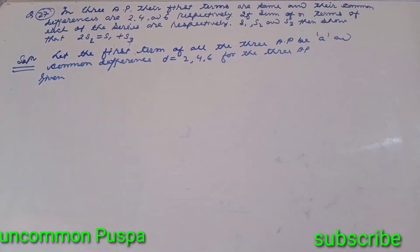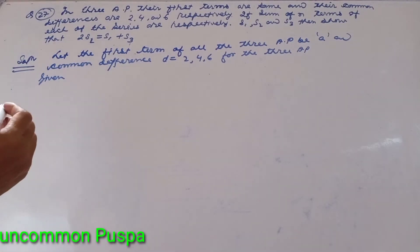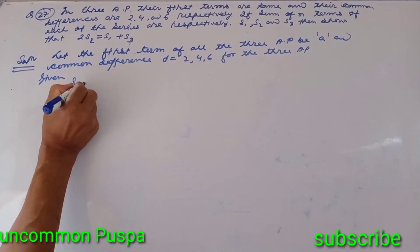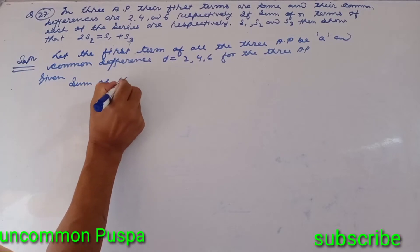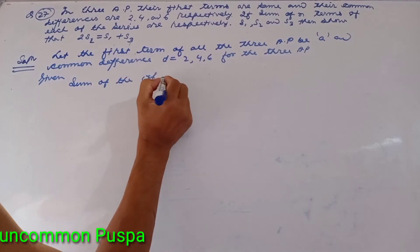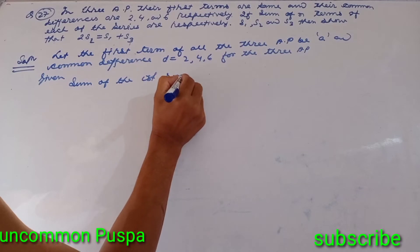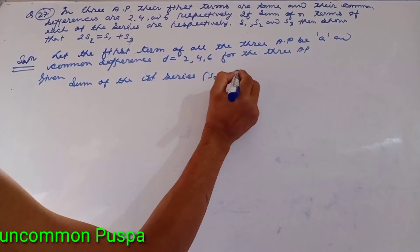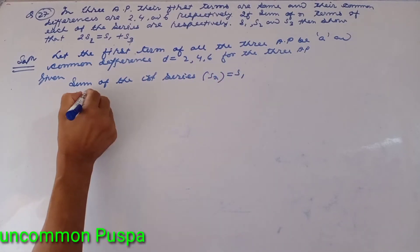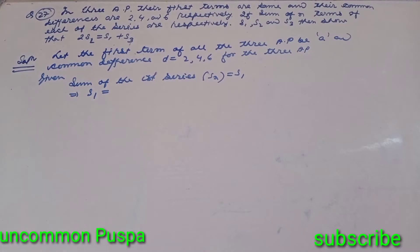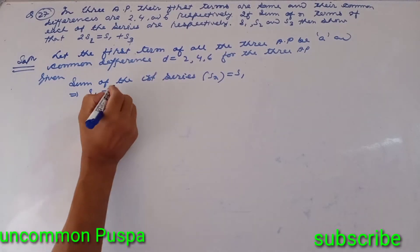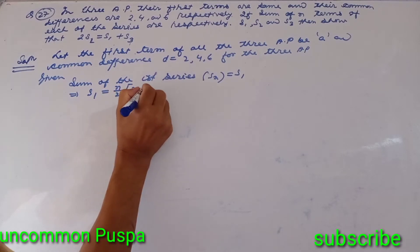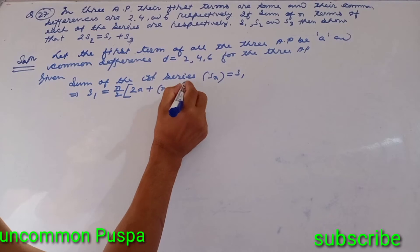Given: sum of the first series. Sn is equal to S1. S1 is equal to n by 2 times twice a plus n minus 1 times D.